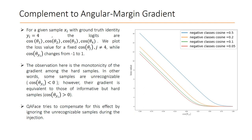We plot the loss value for a fixed impostor cosine while the genuine cosine changes from minus 1 to 1. The observation here is the monotonicity of the gradient among the hard samples. In other words, some samples are unrecognizable and have negative genuine cosine; however, the gradient is equivalent to or more than those of informative but hard samples with positive genuine cosine. The QA phase tries to compensate for this effect by ignoring the unrecognizable samples during the injection.